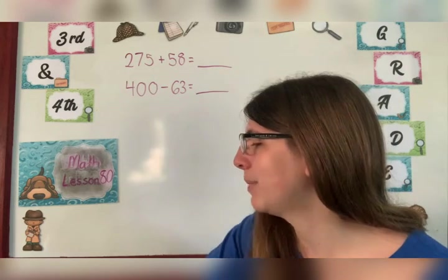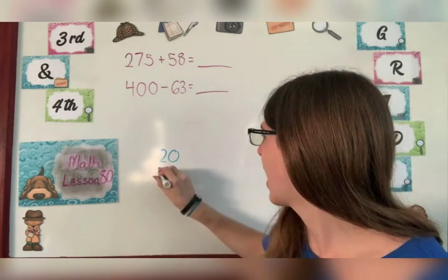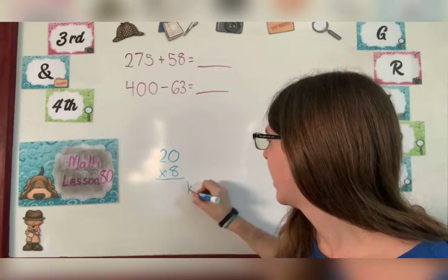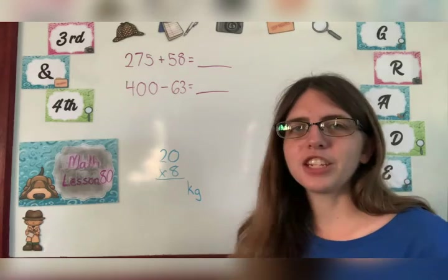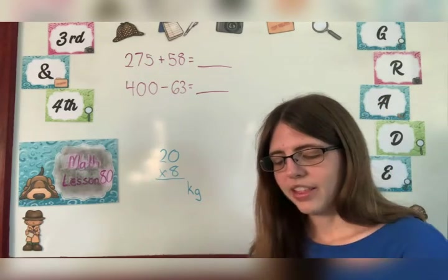So we take our 20 kilograms and we multiply that by eight to find out how many kilograms, that's the abbreviation for kilograms, this tree produced.